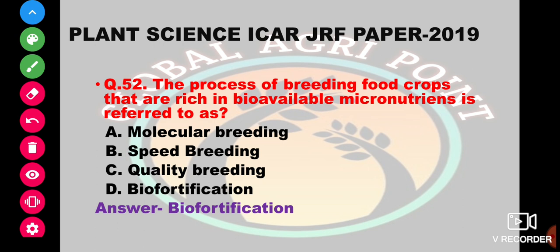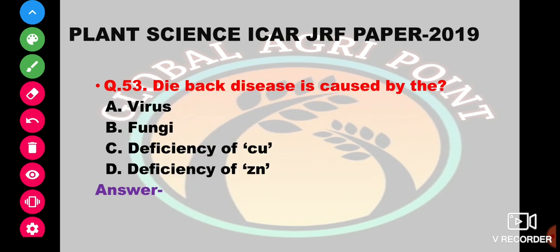The process of breeding food crops rich in bioavailable micronutrients is referred to as molecular breeding, speed breeding, quality breeding, or biofortification. The answer is biofortification.